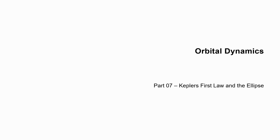Welcome to Orbital Dynamics Part 7. In this part, I'm going to describe one of the seminal discoveries in orbital dynamics: Johannes Kepler's discovery that orbital paths are elliptical. I'm going to talk about some of the history and then explain how Kepler went about solving this problem. It was a problem that vexed him for decades until he solved it.